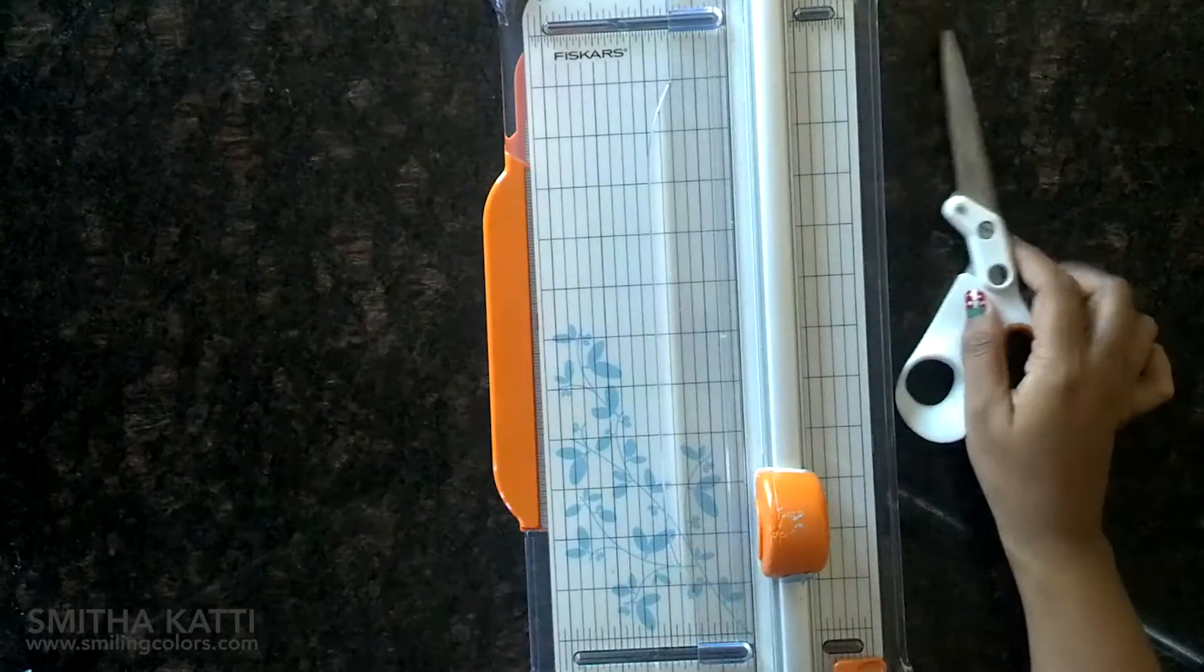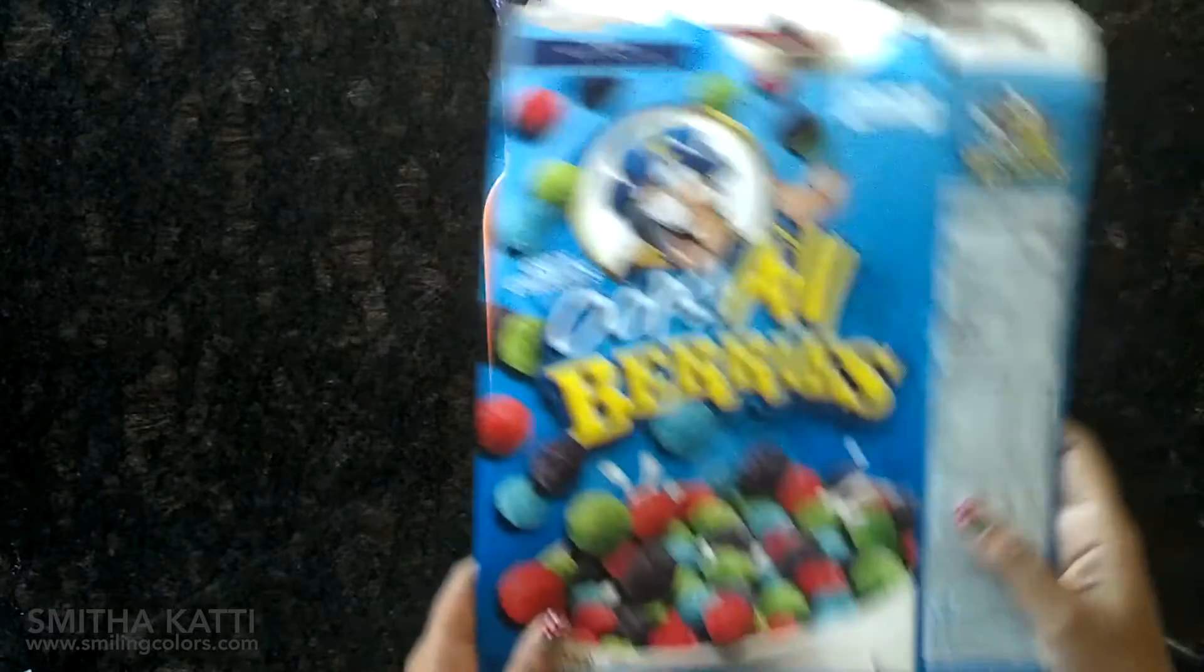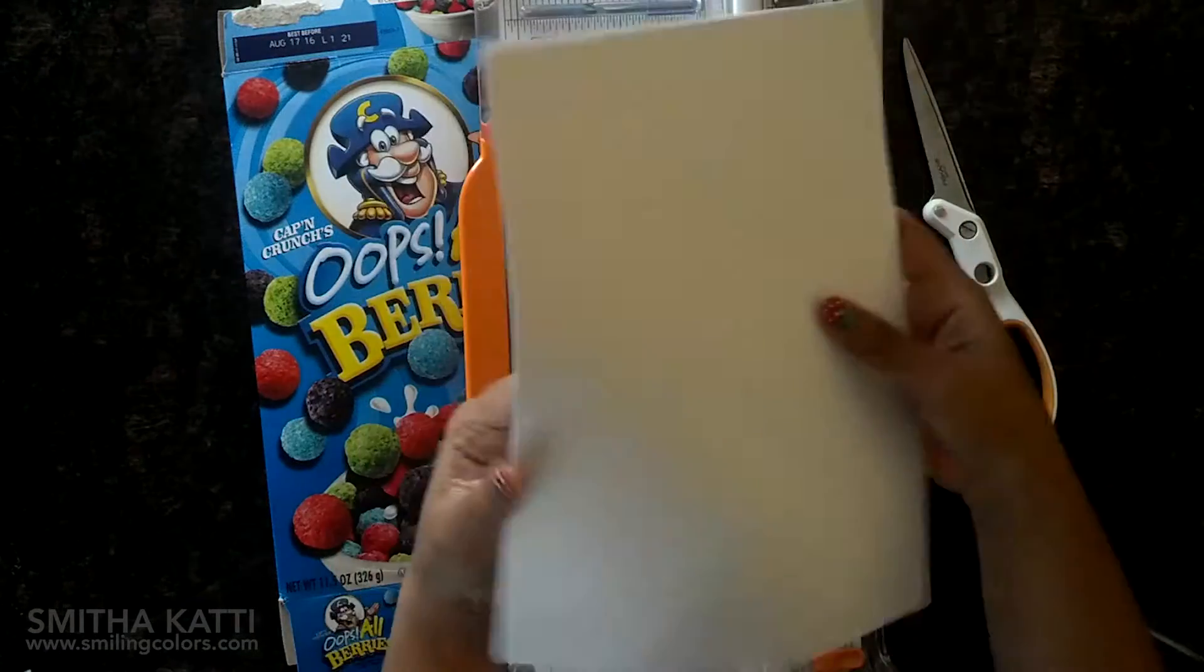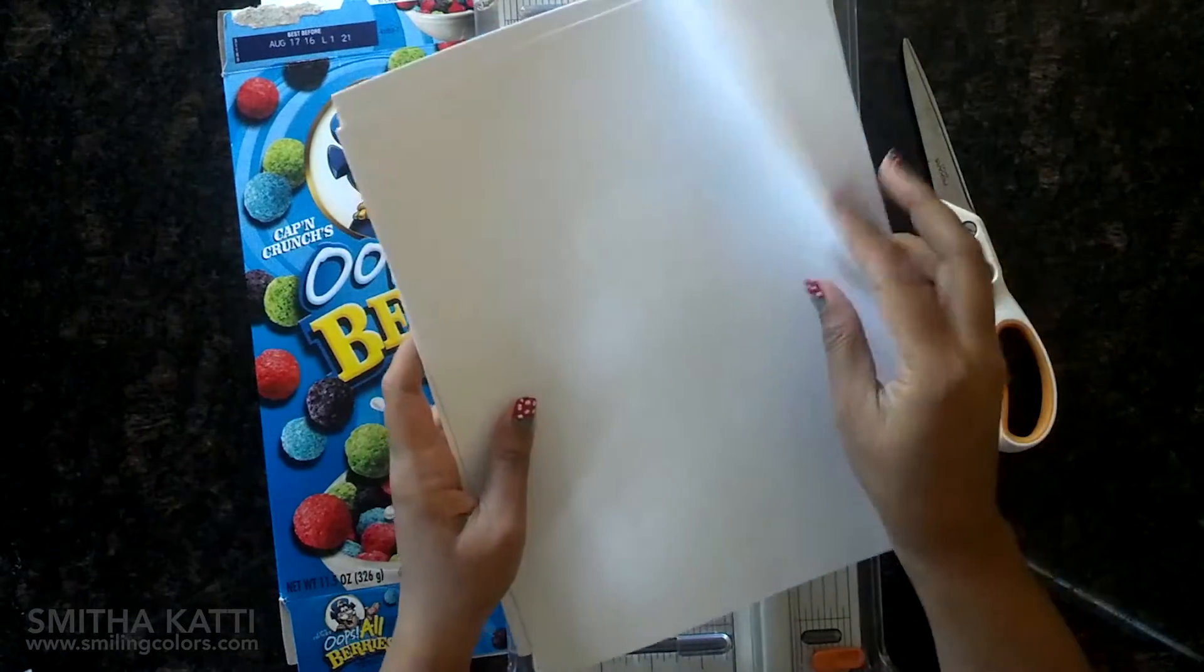Things you will need to gather: a paper trimmer, a pair of scissors, an empty cereal box or some kind of thin cardboard, some sheets of paper. You can use any kind of paper of your choice. I am using basic printer paper today.